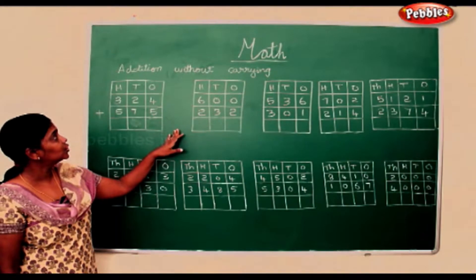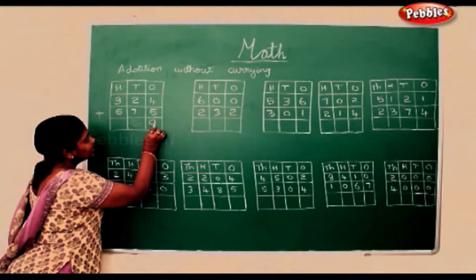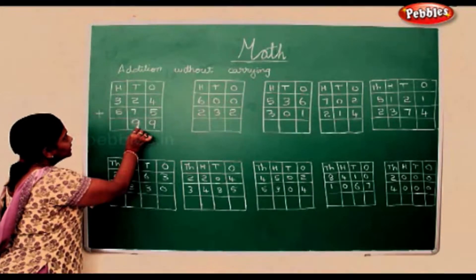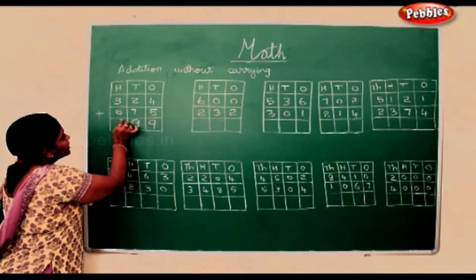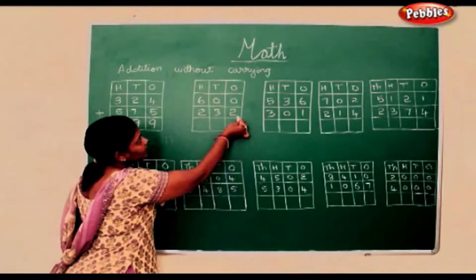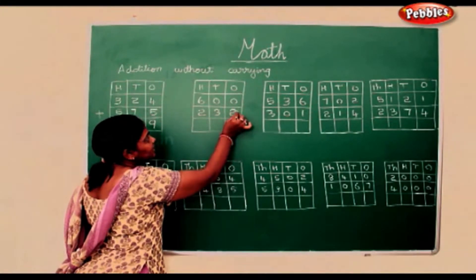Now we shall see addition without carrying. 4 add 5 is 9, 2 add 7 is again a 9, 3 add 5 is 8. Make some 0 add to any number. Any number added with 0 will be the number itself.